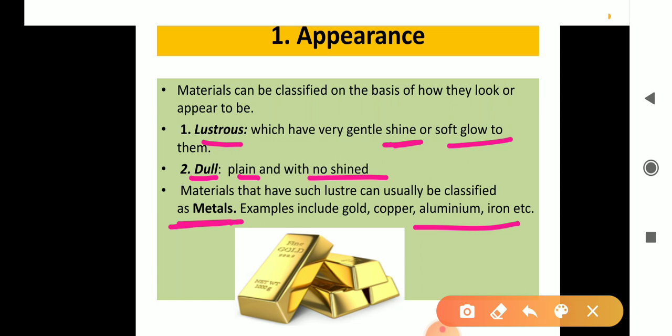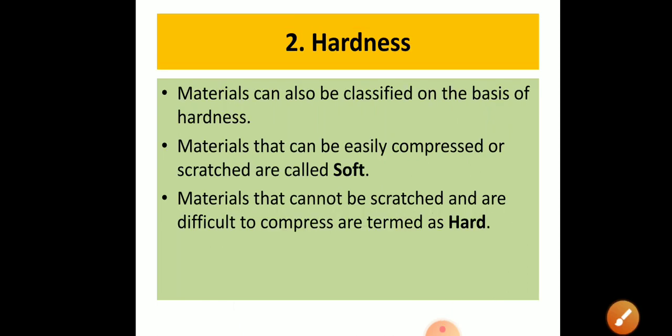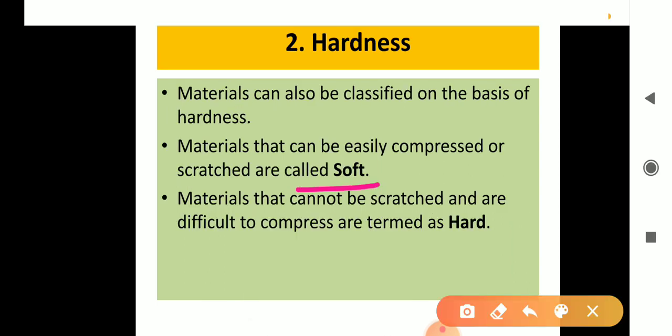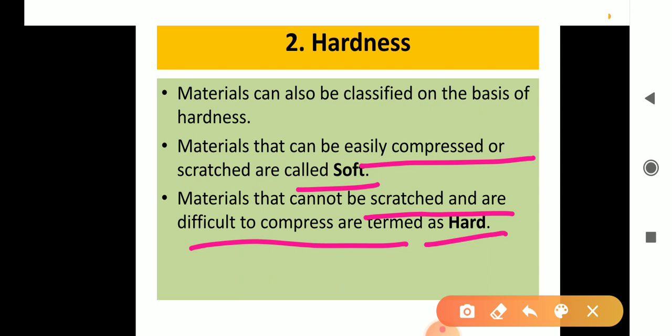Next is hardness. Some substances can be compressed and some cannot. For example, if you try to compress a wooden bar, you will not be able to do that. But if you have a teddy or cotton sponge, you can easily compress them. Materials which can be compressed easily are called soft materials, and those that cannot be compressed are called hard materials. For example, when we scratch a crayon with a nail, the crayon gets scratched — so the crayon is a softer material.